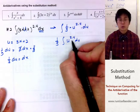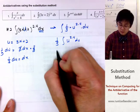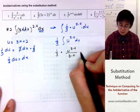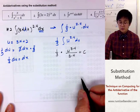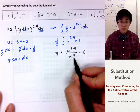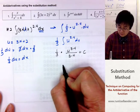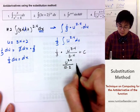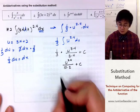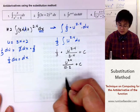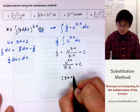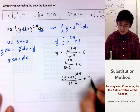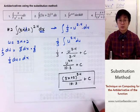Using the power rule, 2.4 plus 1 is 3.4, so we have one third times u to the 3.4 all over 3.4 plus c. Simplifying further, 3 times 3.4 is 10.2, so we have u raised to 3.4 over 10.2 plus c. Substituting back, u is 3x plus 2, giving us (3x plus 2) raised to 3.4 all over 10.2 plus c.